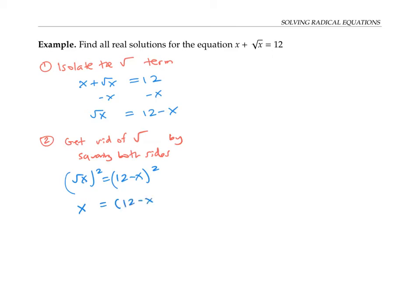To work out (12 minus x) squared, I'll distribute: 12 times 12 is 144, 12 times minus x is minus 12x, and I get another minus 12x from the other term. Finally, minus x times minus x is positive x squared. Combining the minus 12x terms gives minus 24x.